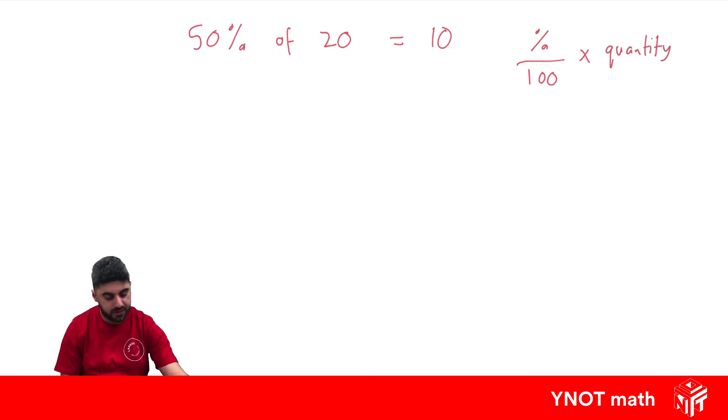So let's apply that here. We take our 50%, divide it by 100, and whatever we want to find 50% of is what we multiply it by.